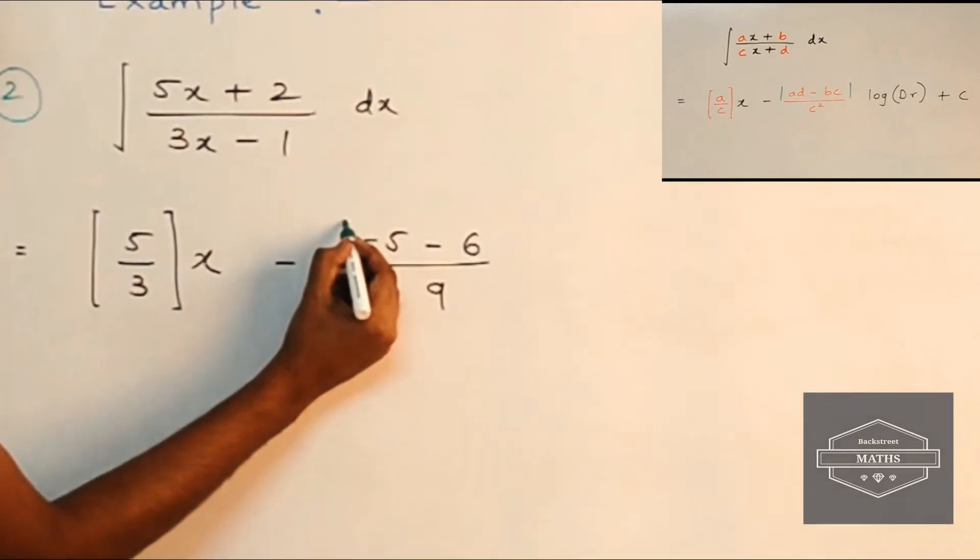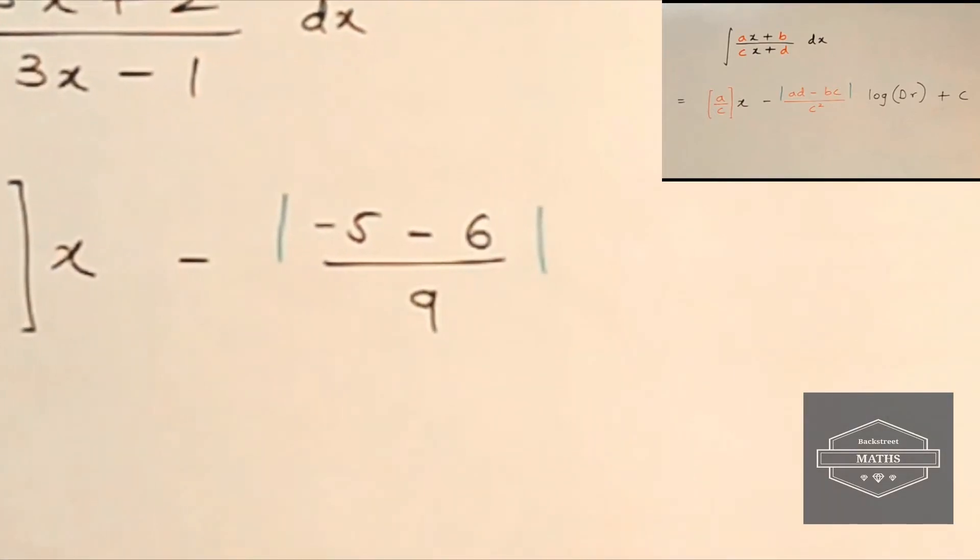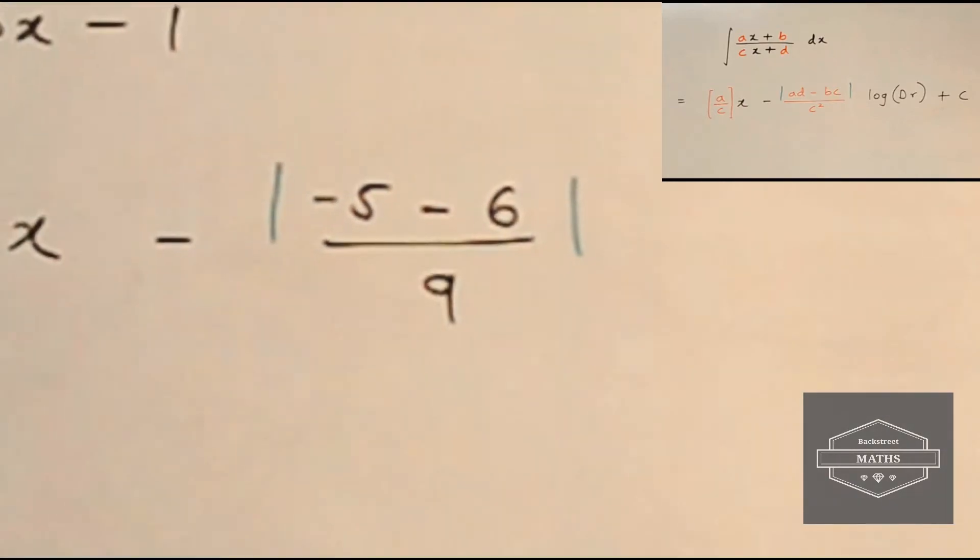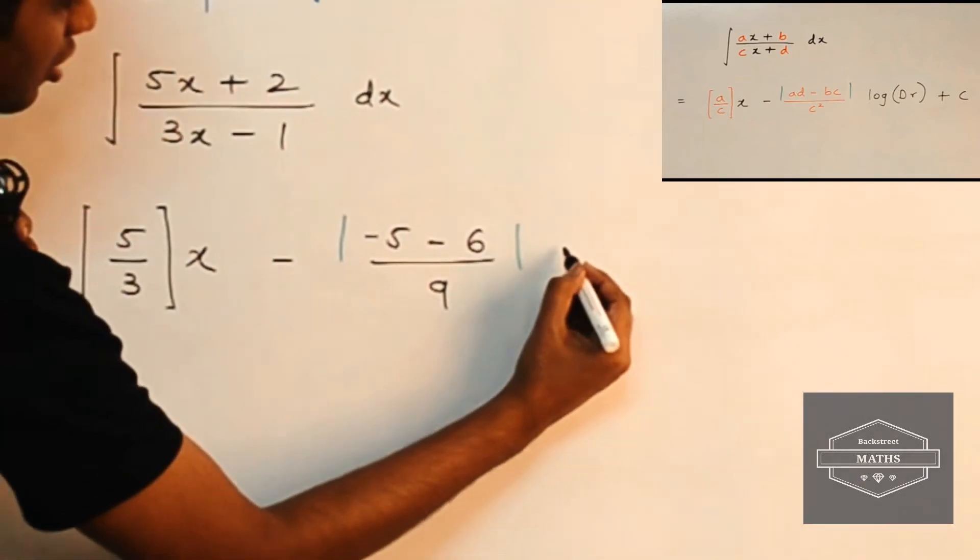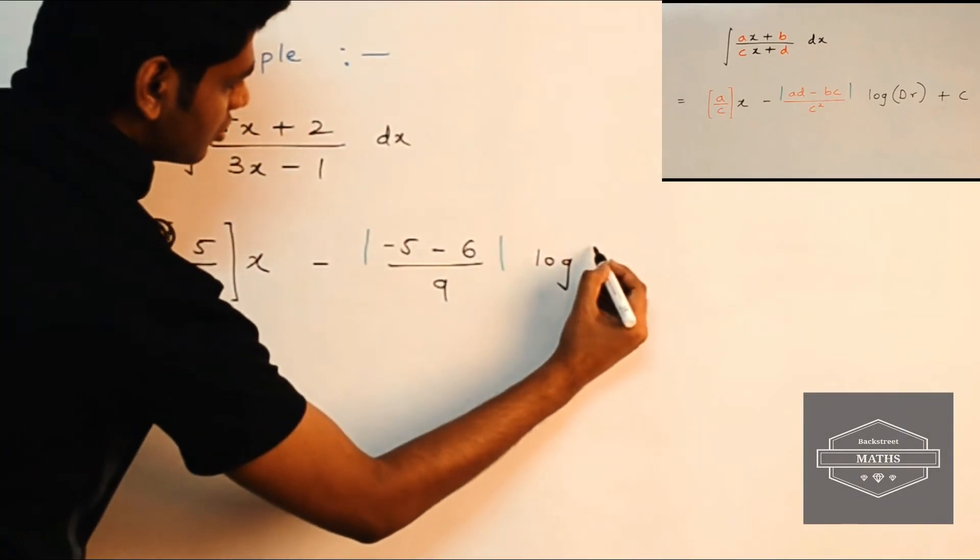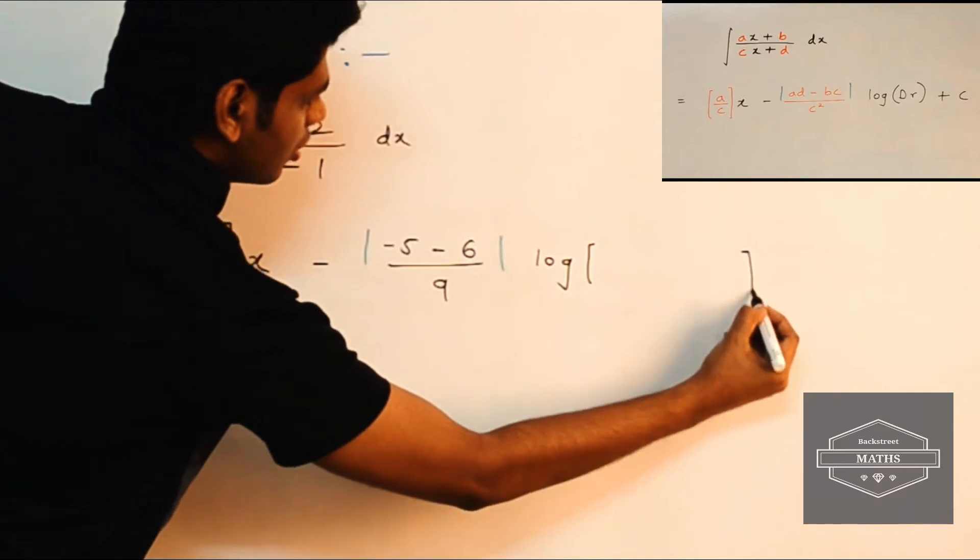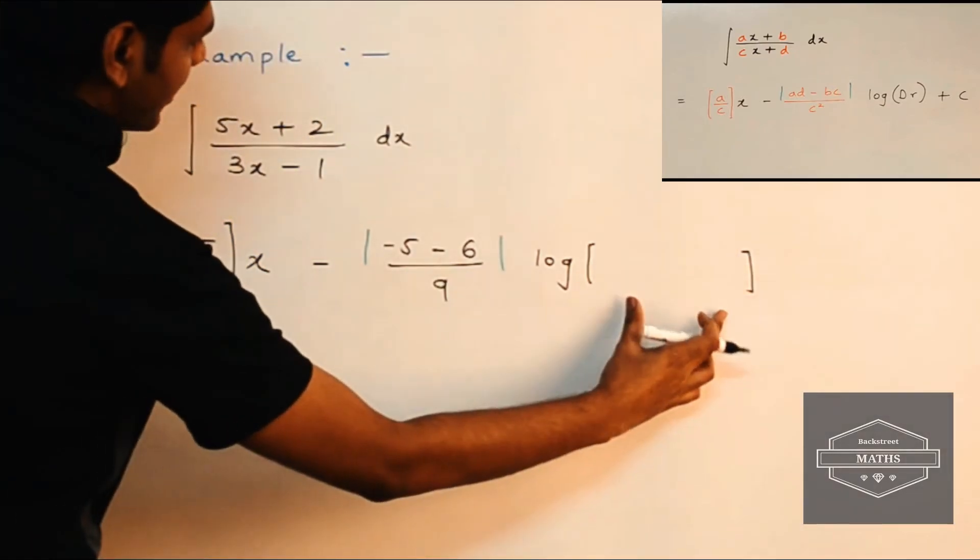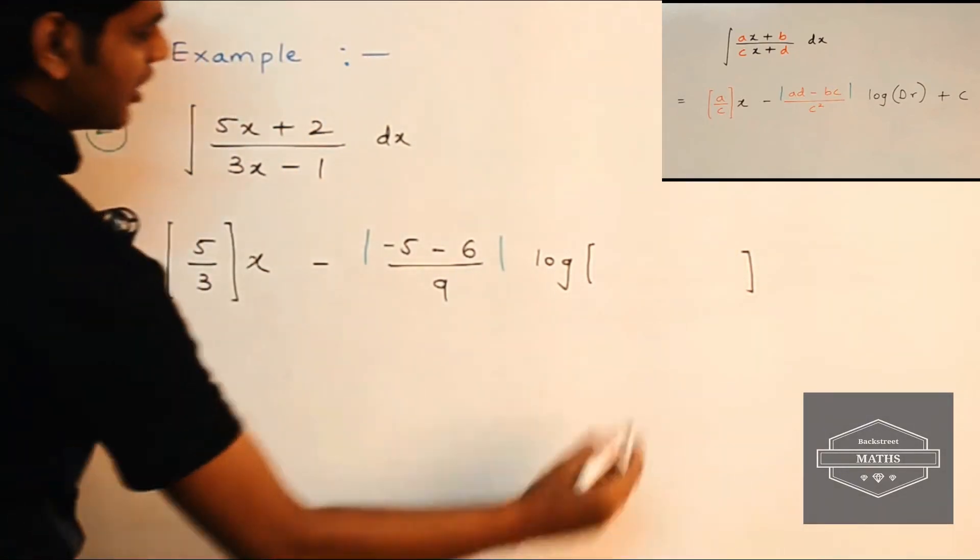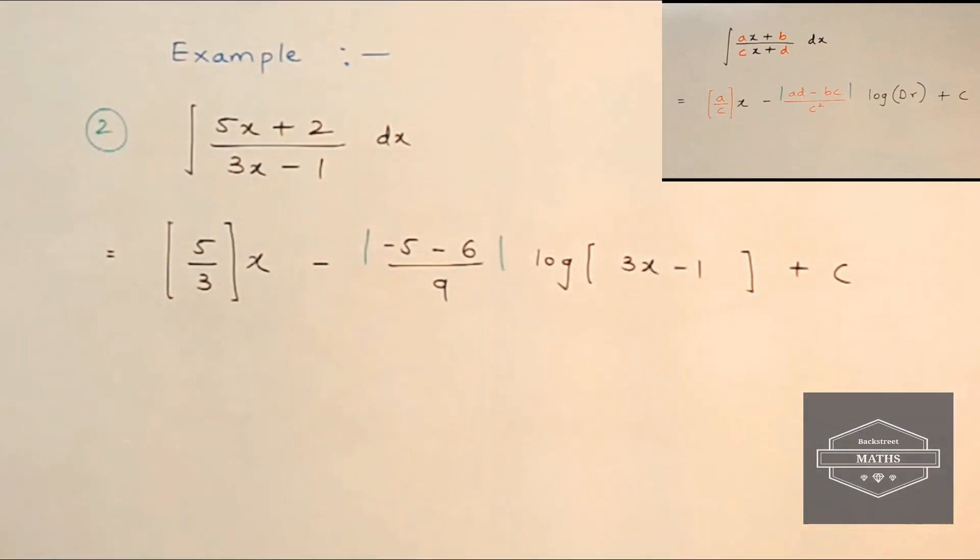And we put this term inside a modulus sign. And now let's multiply our second term with log of denominator. So here it will be log of, inside the bracket we have to write 3x minus 1. All right, so here we go, the final answer is.